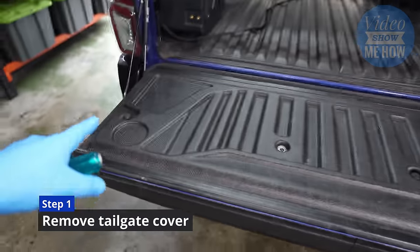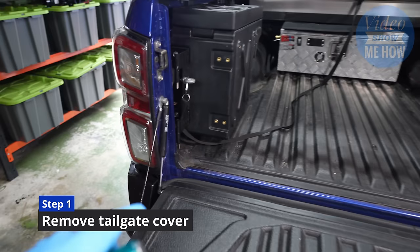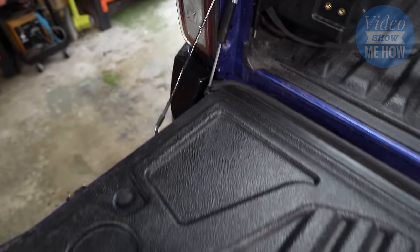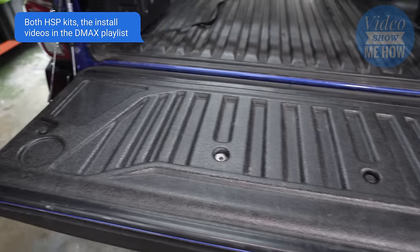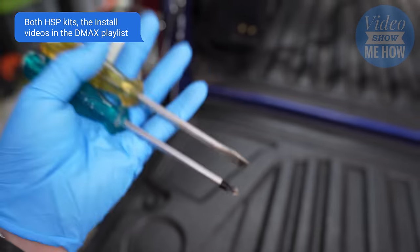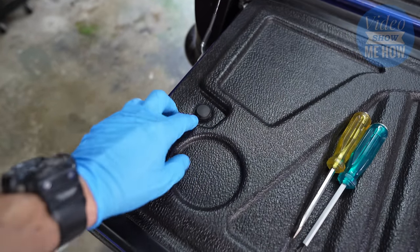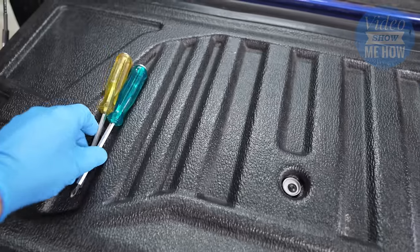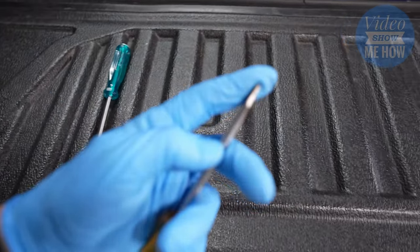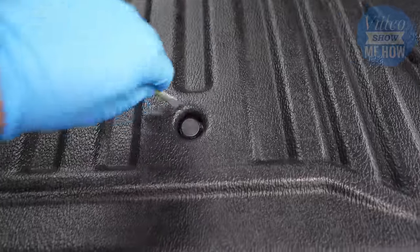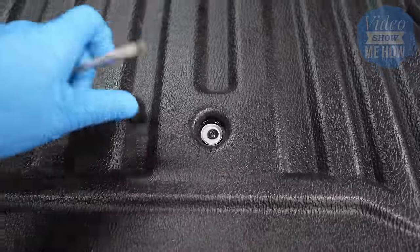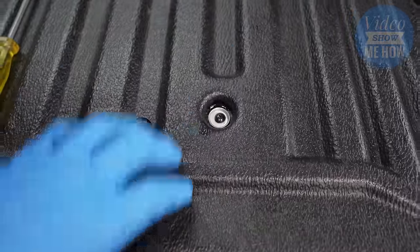Step one is to remove our factory cover. If you've watched the video on the tailgate struts and the central locking, you already know how to do this. Basically, you just need to grab your flathead and a Phillips head. There are four little clips with bolts underneath them. Just a matter of grabbing your flathead, getting it underneath, popping those up, and then using your Phillips head to unscrew the screws.